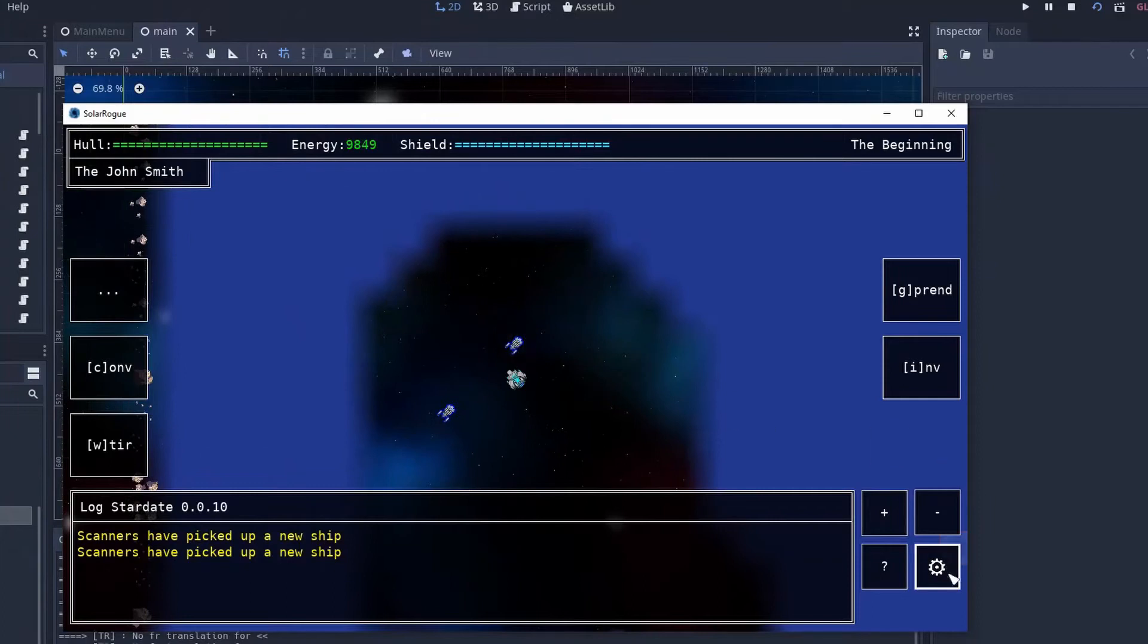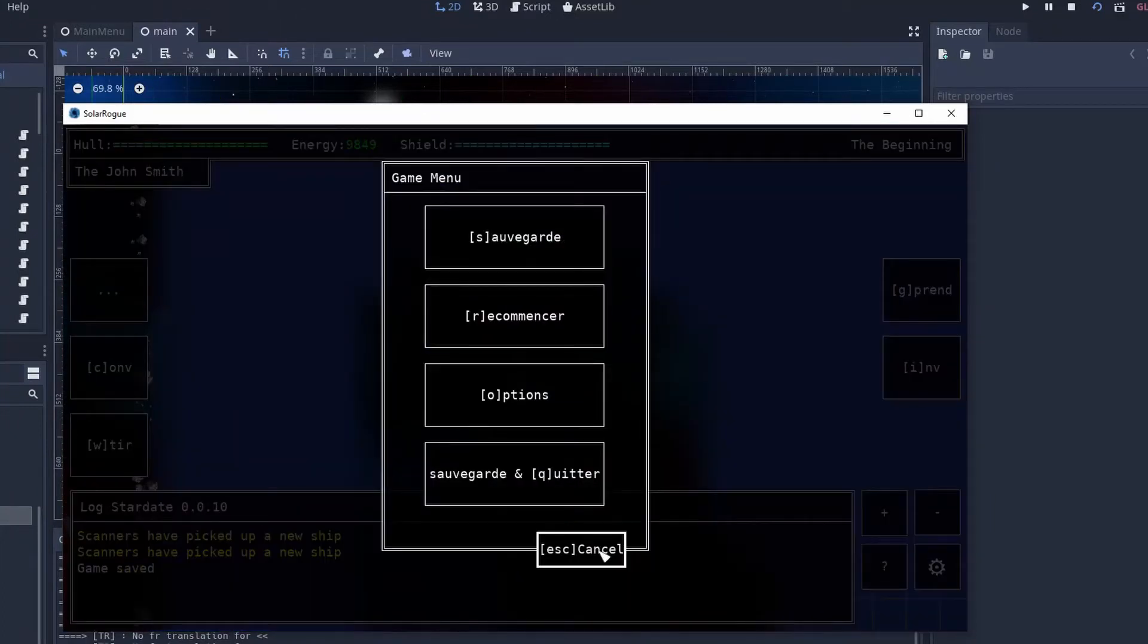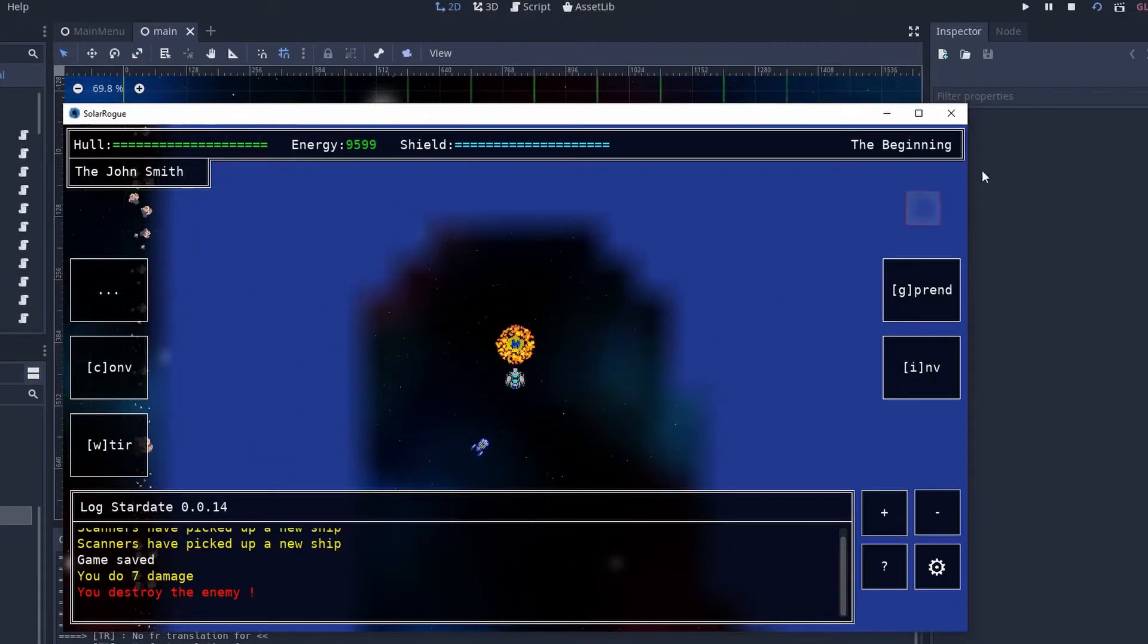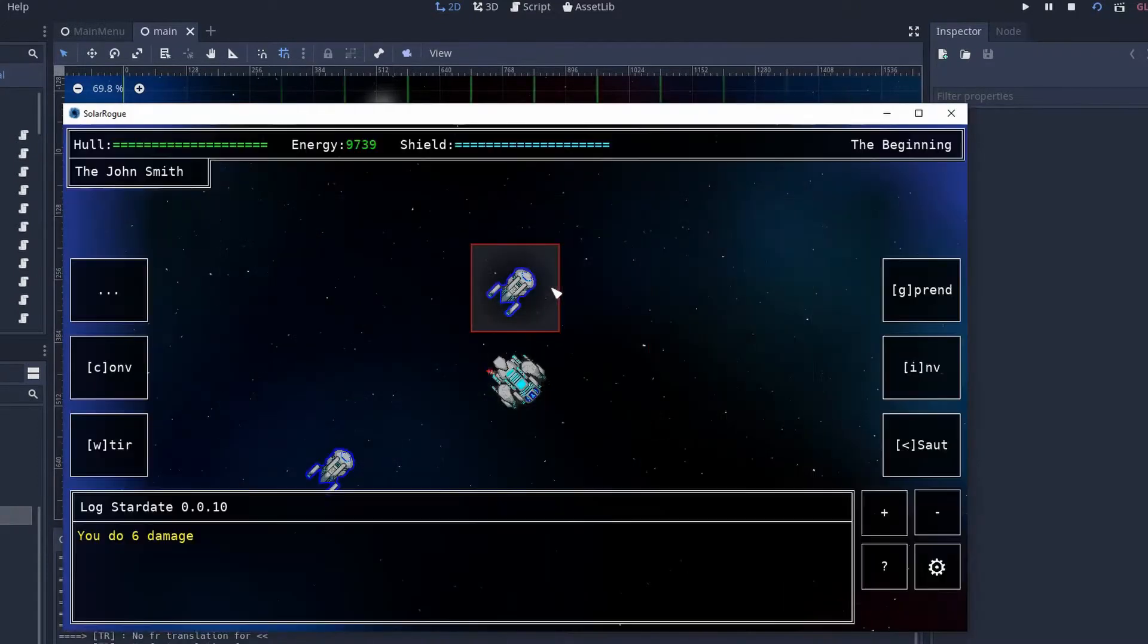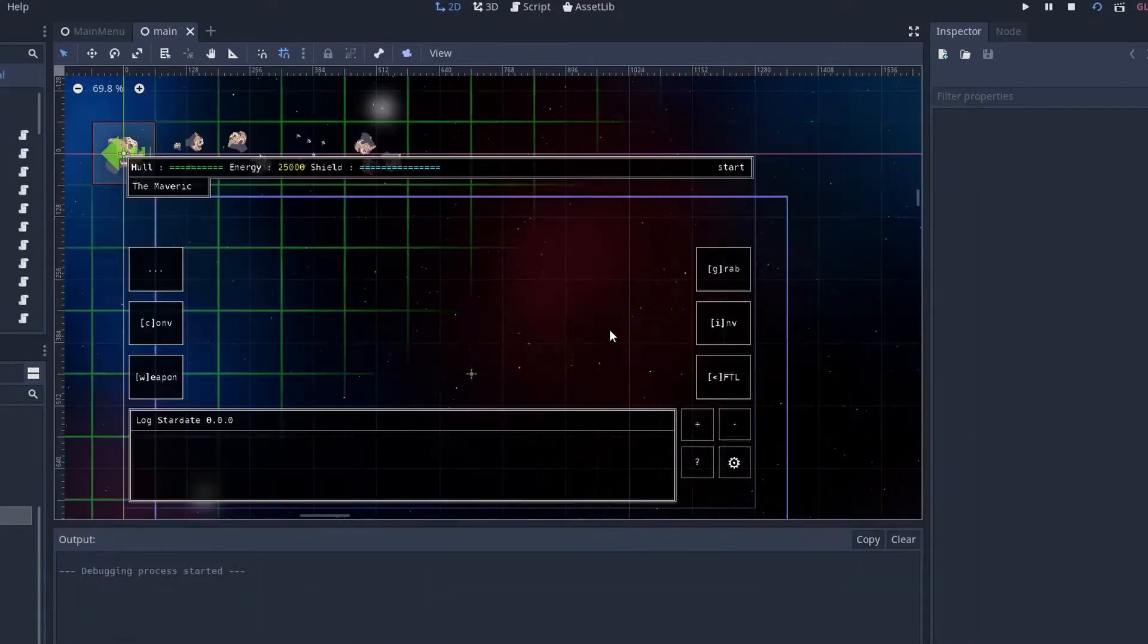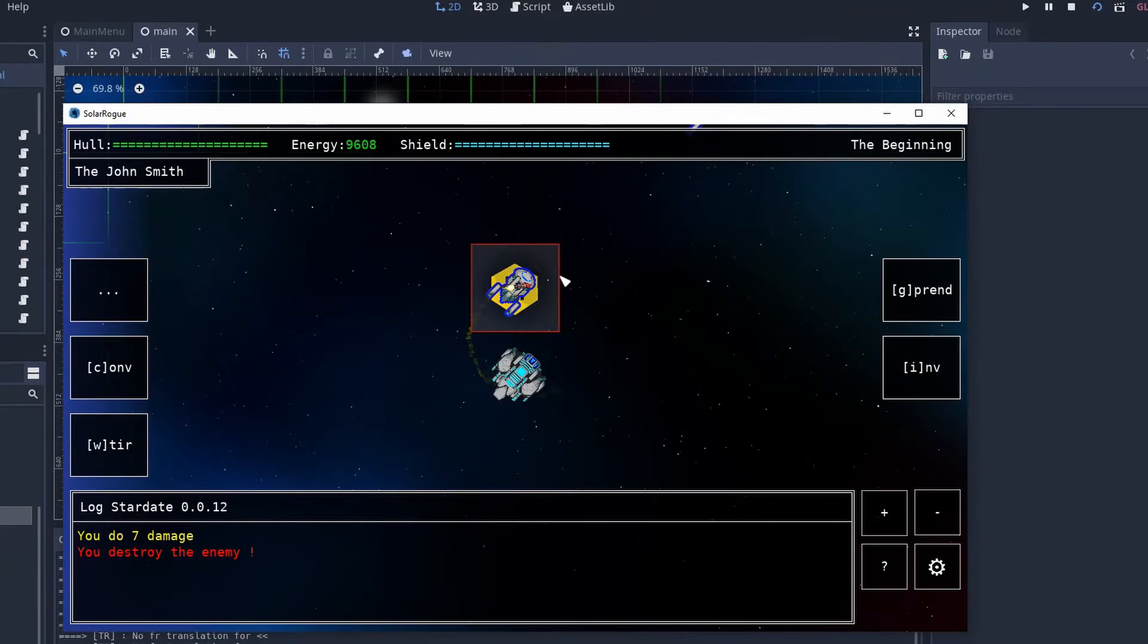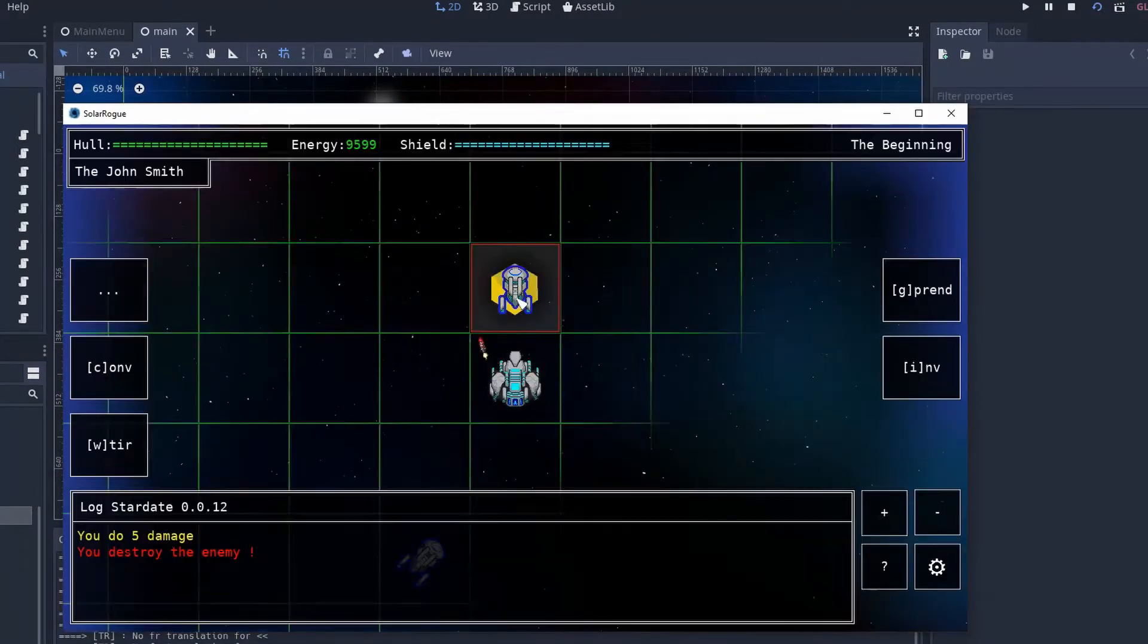So up until now my game was saving on demand. Basically I had a button and if you don't click the button the game doesn't save, which was really great for debugging and testing because I could always restart the game at the same point and test again and again the same thing, but as a player it makes way more sense if the game saves after every turn.